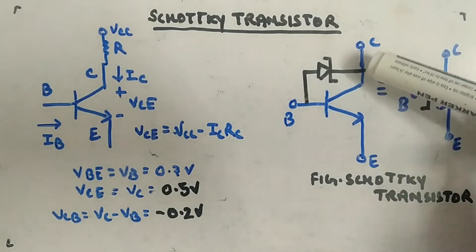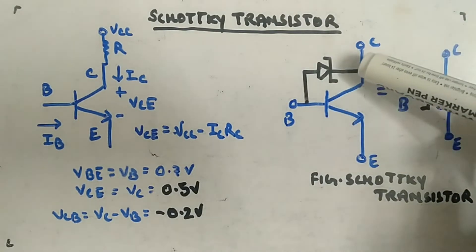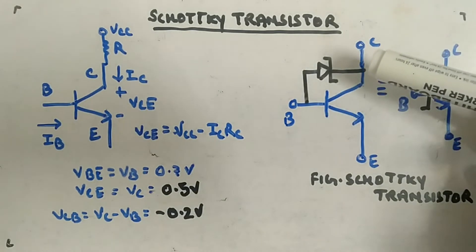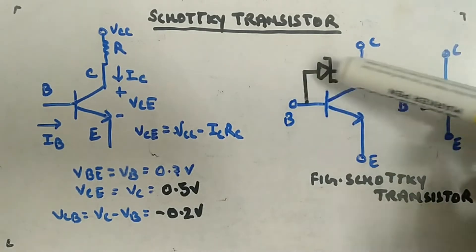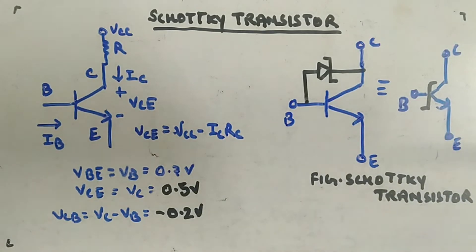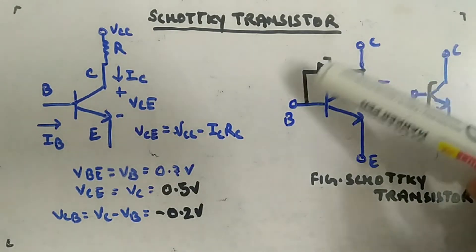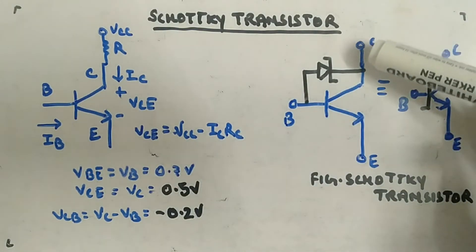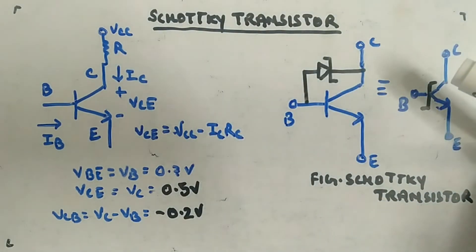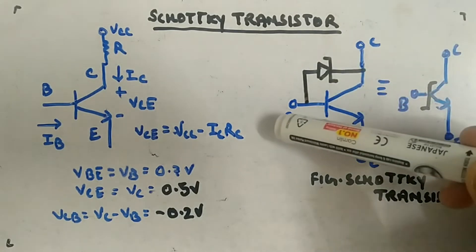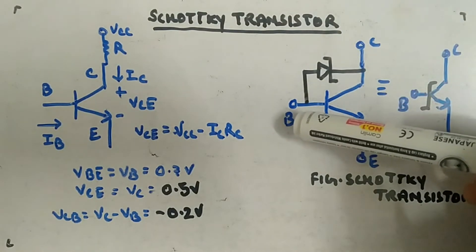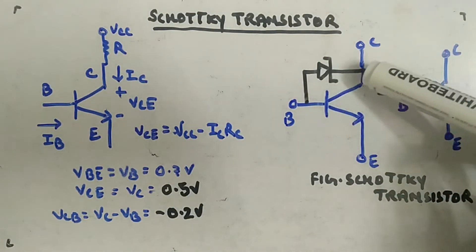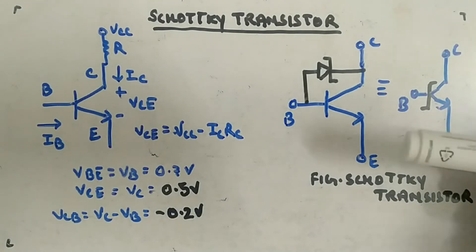So whatever the value of VB, VC will be 0.3 volts more than VB, meaning VC will always be greater than VB. Hence the CB junction will always remain reverse biased. The transistor is therefore kept in active or cutoff only — it never enters saturation. Based on whether the BE junction is forward or reverse biased, the transistor will be in active or cutoff respectively. Extra excess current coming in will go through the Schottky diode to the collector, maintaining the active region.